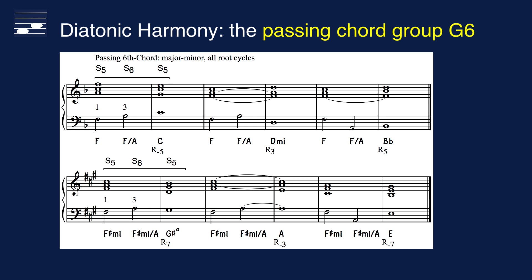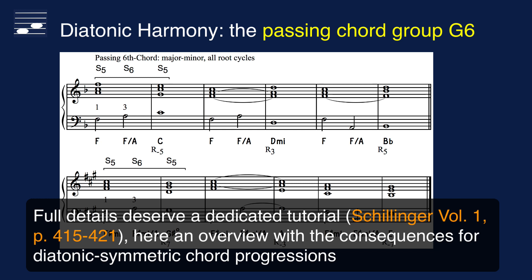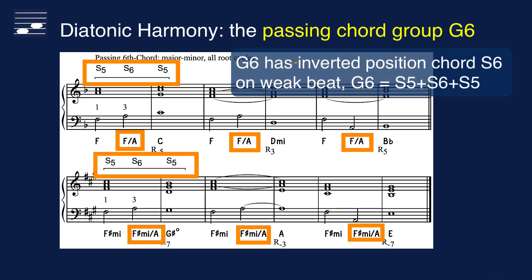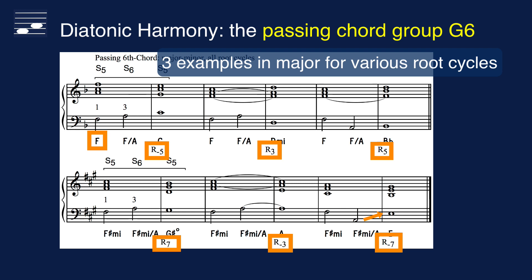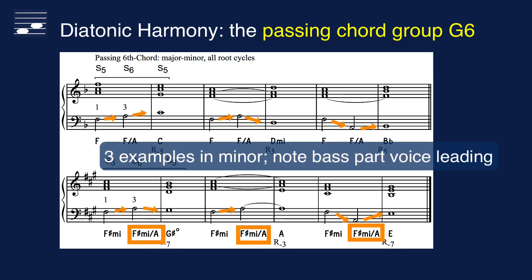The next mechanism that affects the lower part is the usage of passing chord groups. Schillinger discusses two standard formulas. The first is the passing sixth chord group, which has the inverted chord on a weak position in the bar. Passing chord groups deserve a separate tutorial, but this slide has an overview of a number of passing sixth chords. The group consists of two chords in root position surrounding the S6, and it occurs in major and minor and for various root cycles. The bass part may ascend or descend.